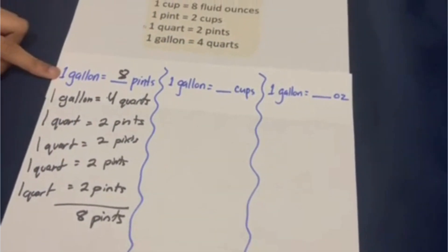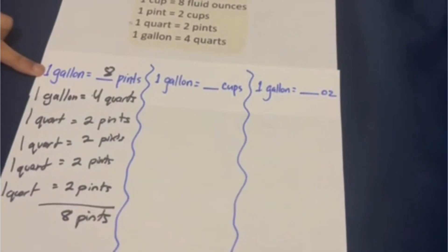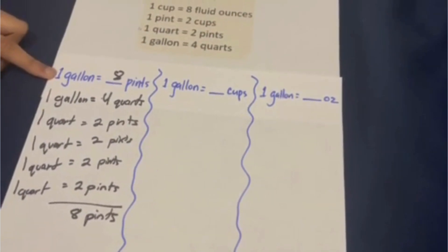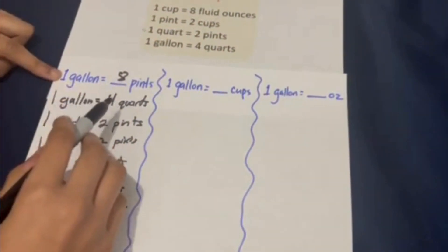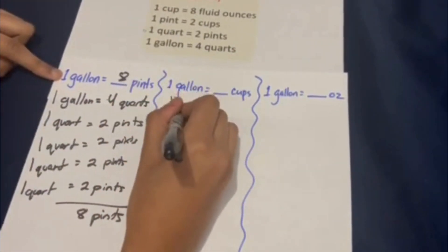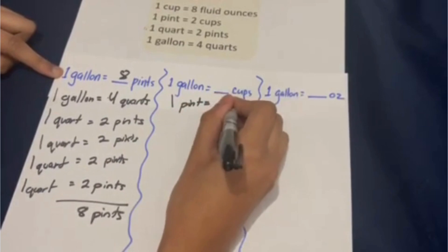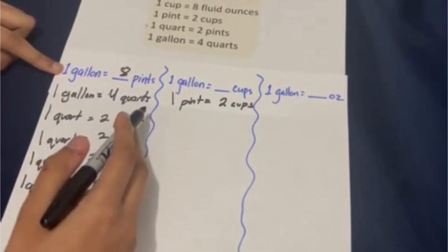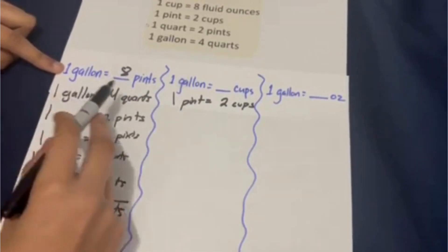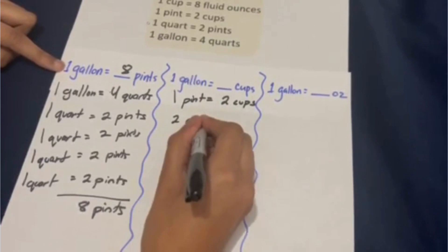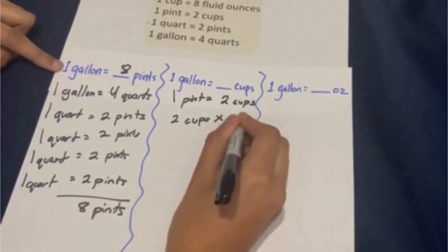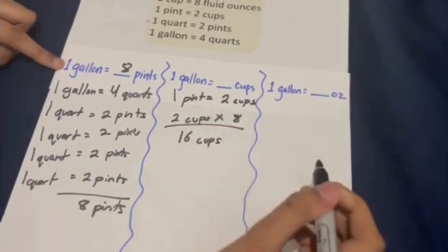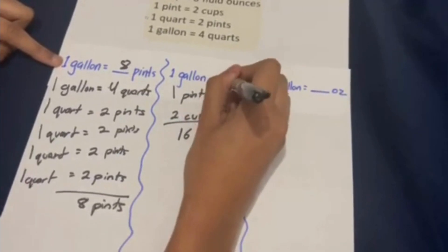Now that we know how many pints are in a gallon, it'll make it easier to figure out how many cups are in a gallon — we'll just have to figure out how many cups are in eight pints. Since we know that one pint is equal to two cups, we would have to do one pint times eight, or two cups times eight, which is sixteen cups. Meaning that there are sixteen cups in one gallon.